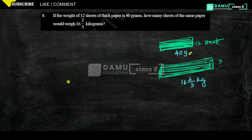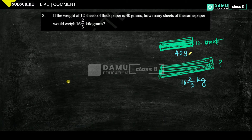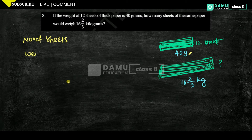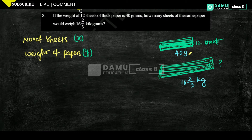We are given a mixed fraction 16 and 2/3 kilograms and we need to find the number of sheets. Let the number of sheets be x and the weight of the paper be y. The first case gives us 12 sheets for 40 grams.